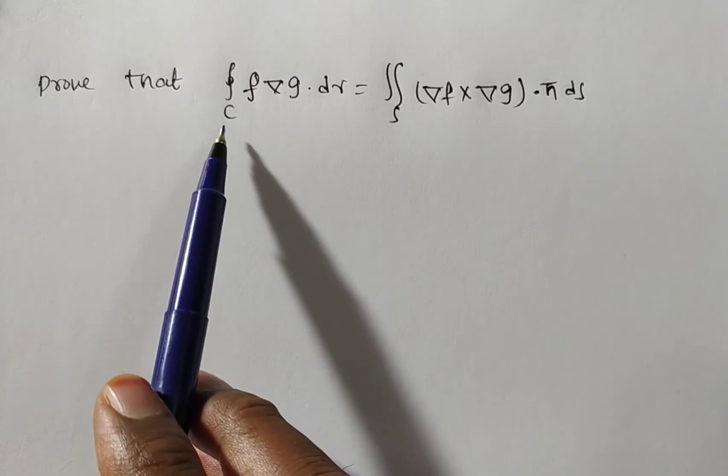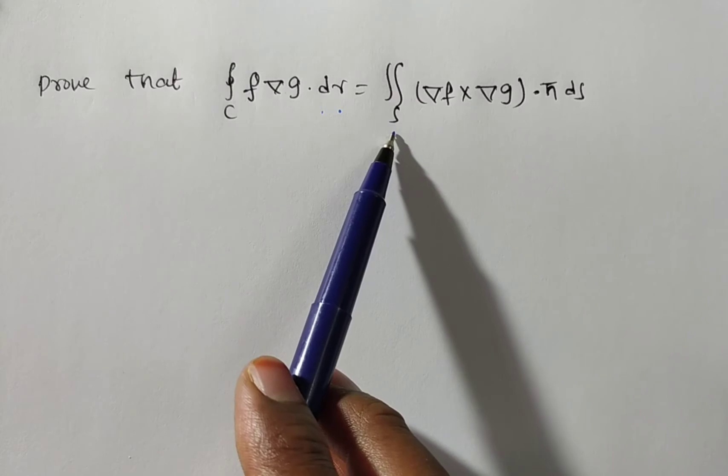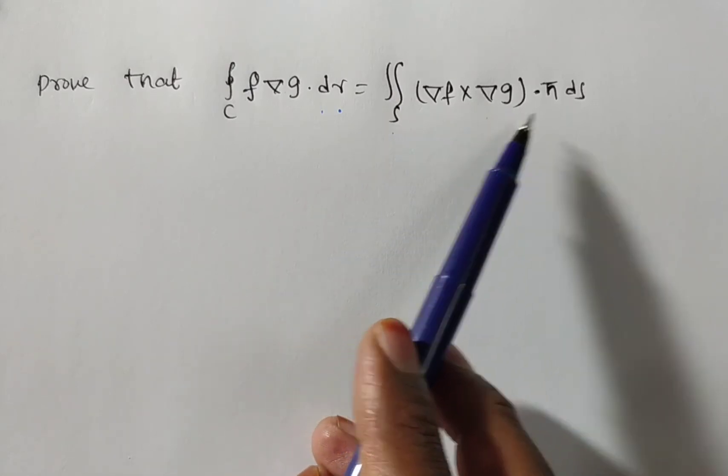The given problem is prove that integral over c f del g dot dr is equal to double integral s del f cross del g dot n bar ds.